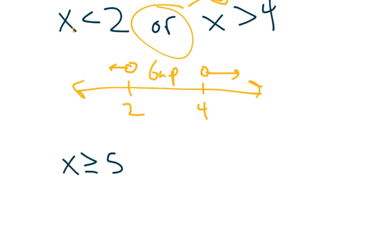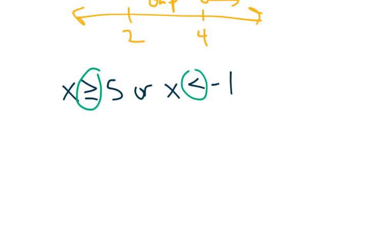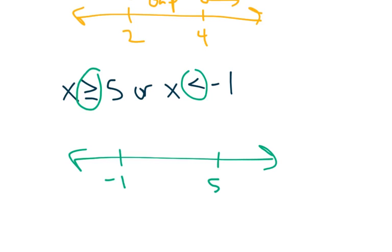For example: x is greater than or equal to five OR x is less than negative one. Make a number line with negative one and five. Since I see 'or', I know it's going to be a gap. For x less than negative one, open circle going left. For x greater than or equal to five, closed circle going right.